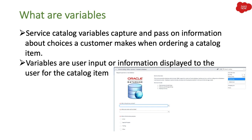So what are variables? Service catalog variables capture and pass on information about choices a customer makes when ordering a catalog item. If you are creating a catalog item and you want end users to fill in some information, those are called variables. Variables are user inputs displayed to the user for the catalog item.